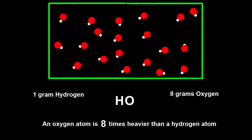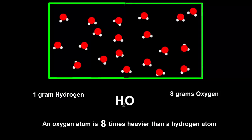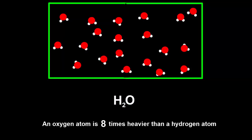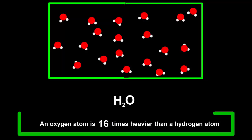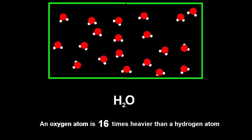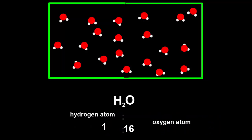But when scientists realized that water is H2O and that there are twice as many hydrogen as oxygen atoms, they knew that an oxygen atom must be 16 times heavier than a hydrogen atom. Putting it the other way around, the ratio of a hydrogen atom to an oxygen atom is 1 to 16.